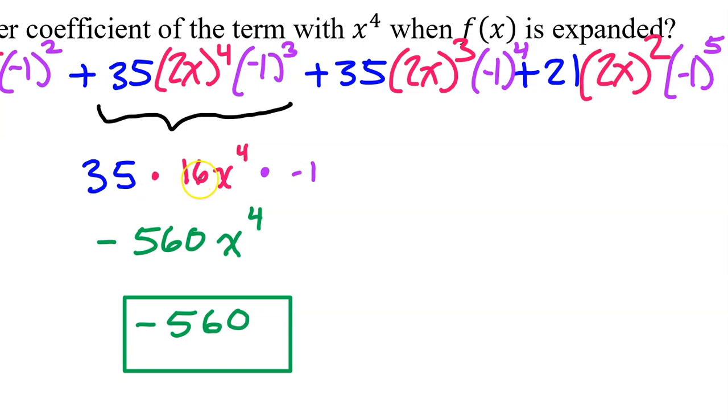35 times 16 is 560. And then times -1 is -560. So that is the coefficient.